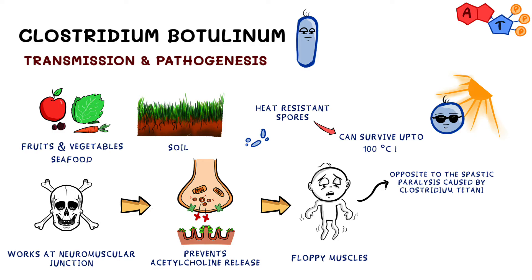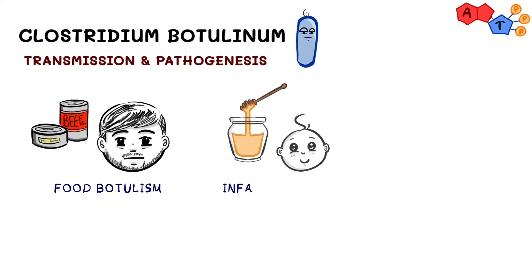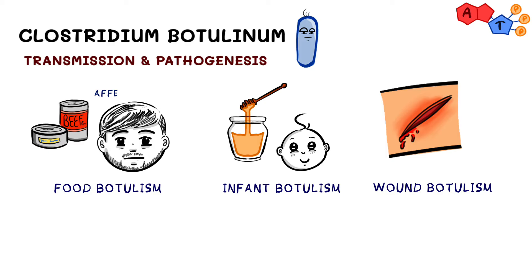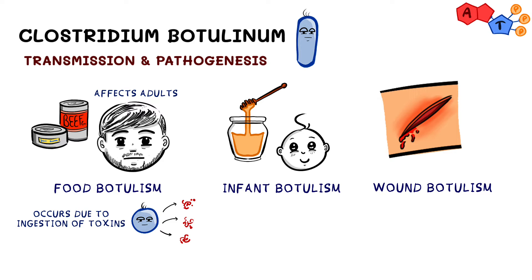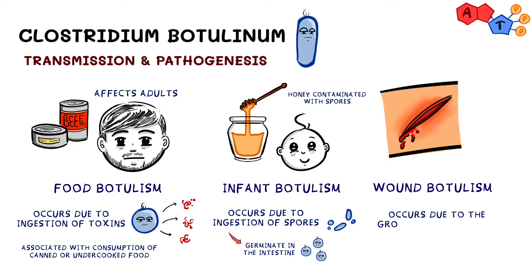Remember, Clostridium botulinum works on the peripheral nervous system, not the central nervous system like Clostridium tetani. There are three types of botulism: food, infant, and wound. The food type mainly affects adults and usually occurs due to ingestion of toxins — a classic scenario is a group of people infected by consumption of canned or undercooked food. The infant type happens due to ingestion of spores which germinate in the intestines; a classic scenario is an infant who has eaten honey contaminated with botulinum spores. Lastly, the wound type occurs due to growth of botulinum in a dirty wound.